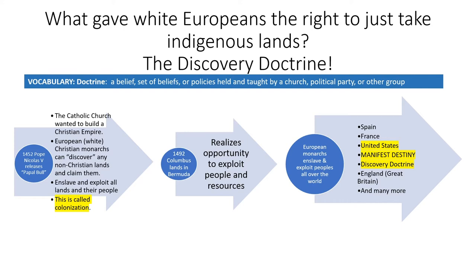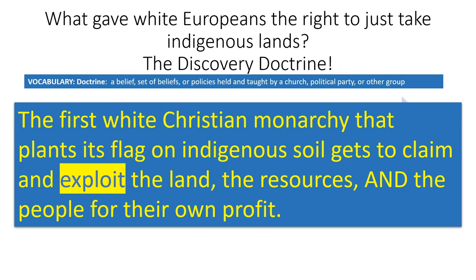It was at that time that the phrase Discovery Doctrine was actually coined or created. And so what ends up happening is that we see the large-scale decimation and destruction of people and the exploitation of resources. To review: the Discovery Doctrine means that the first white Christian monarchy that plants its flag on indigenous soil gets to claim and exploit the land, the resources, and the people for their own profit, and that they can do so in the name of God.